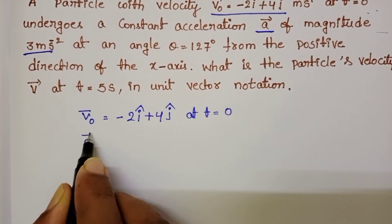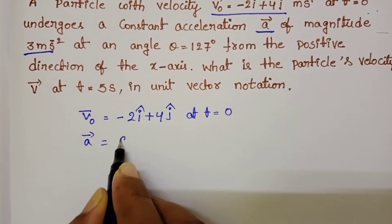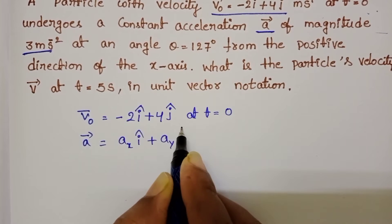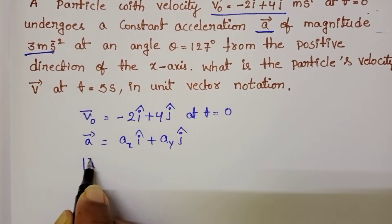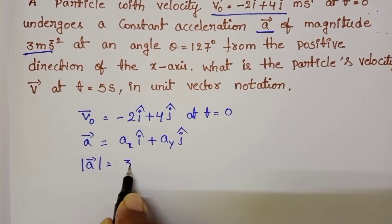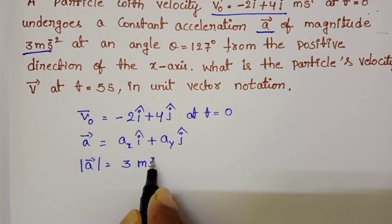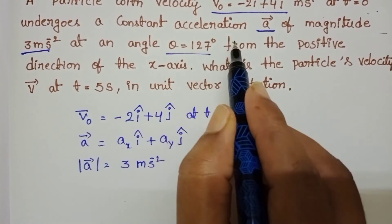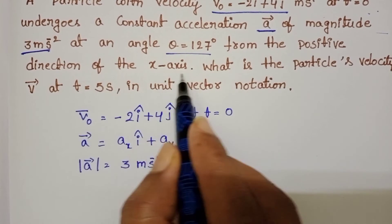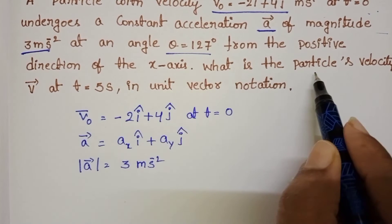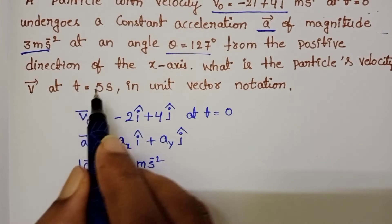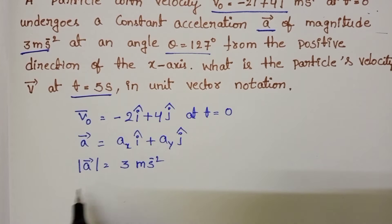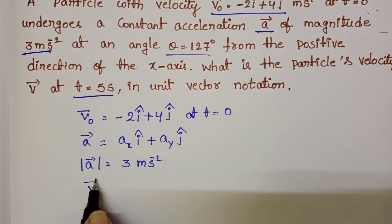The vector representation of the acceleration a bar equals ax i cap plus ay j cap. The magnitude of acceleration is 3 meter per second square, and this acceleration makes an angle of 127 degrees with the positive x-axis. We have to find the particle's velocity at t equals 5 seconds.